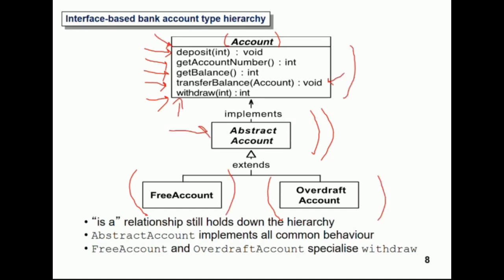The common behavior is deposit, get account, and get balance — that is common to any account. There's only one method which needs to be implemented at the lower levels, which is withdraw. Because how you withdraw and what you're allowed to withdraw depends on the type of account. In a free account you can only withdraw up to the amount you have, whereas in an overdraft account you can withdraw up to a certain amount depending on your overdraft limit.